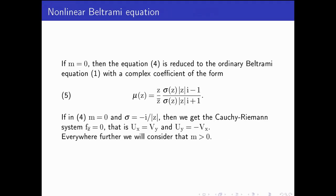If m equals 0, then equation (4) is reduced to the ordinary Beltrami equation (1) with a complex coefficient of the form (5). If in (4) m equals 0 and σ equals minus i divided by |z|, then we get the Cauchy-Riemann system. Everywhere further, we will consider that m is greater than 0.